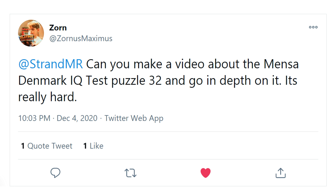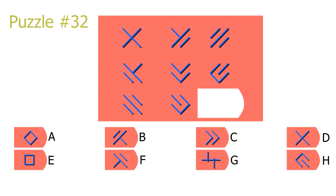But yeah, let's go through Puzzle 32 from Mensa Denmark. Here we have the puzzle. I think most people, including myself, would look at this puzzle and try to find out what changes as you move to the right in a row or downwards in a column. But instead, I want everyone to focus on what stays the same between every picture in a row or a column.